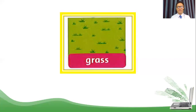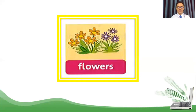Number two: grass. Grass. Now let's say it faster — grass. Grass. Awesome. This one — easy, right? Flowers. Flowers. Flowers. Now faster — flowers. Flowers. Thank you.